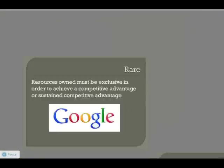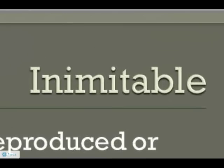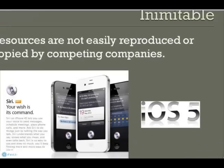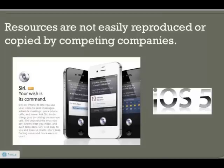Next, we have inimitable. The idea here is that the resource is not easily reproduced or copied by competing companies. A good modern-day example of this would be Apple's iOS software. This is proprietary software only available for use with Apple products and gives them a competitive advantage. They've developed something that people love and are loyal to, while competing companies have not been able to do the same.